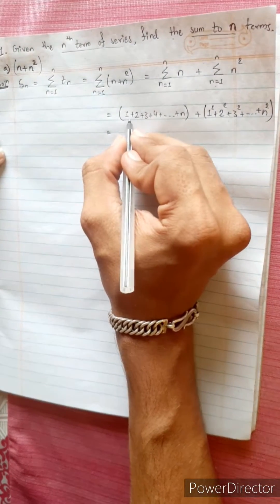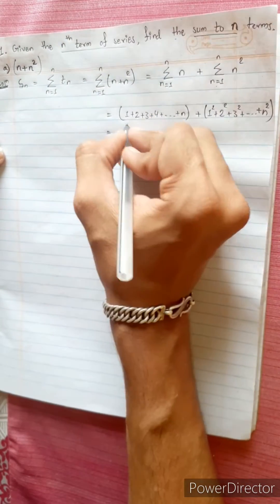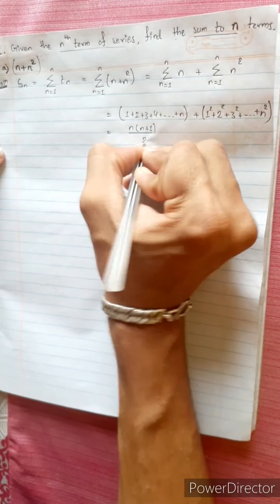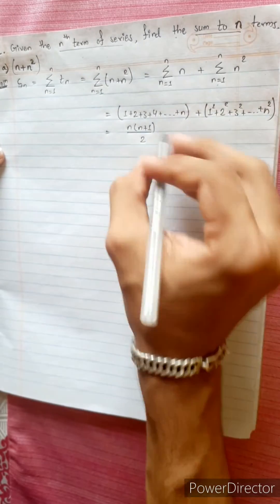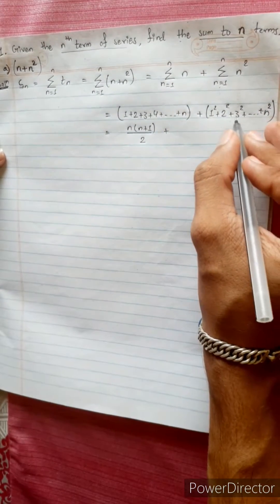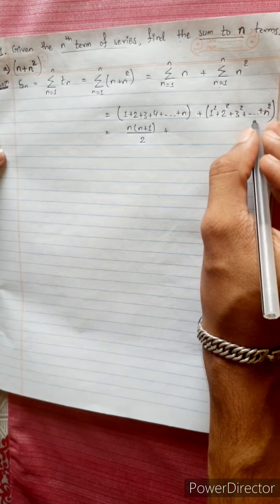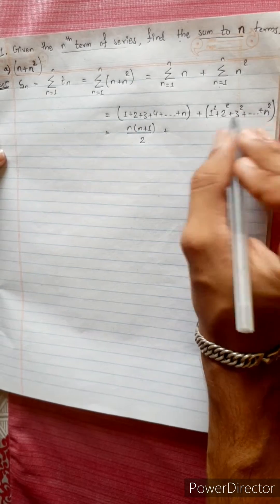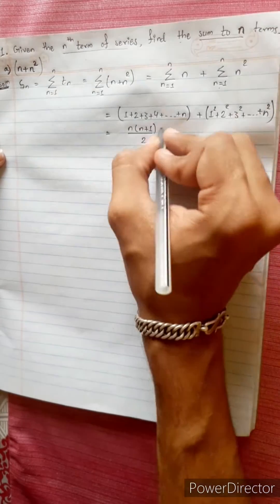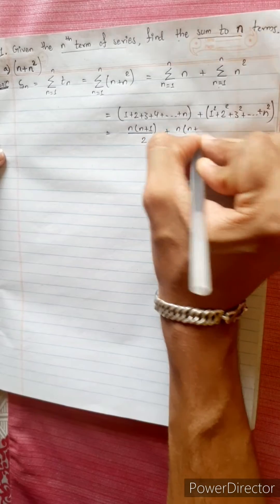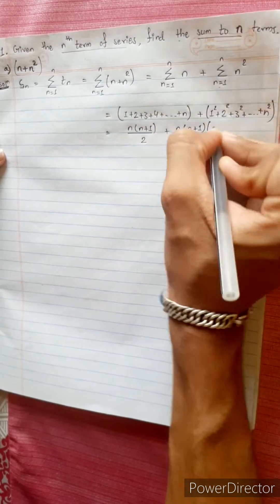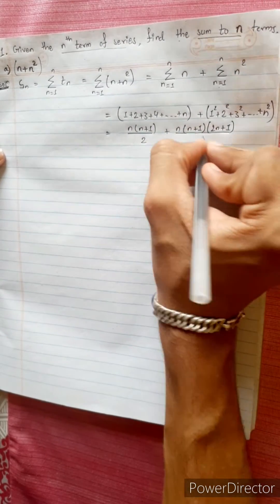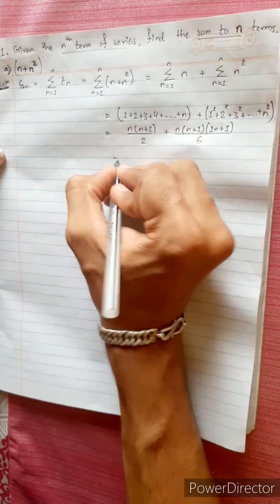The sum of natural numbers formula is n(n+1)/2. The sum of squares of natural numbers formula is n(n+1)(2n+1)/6.